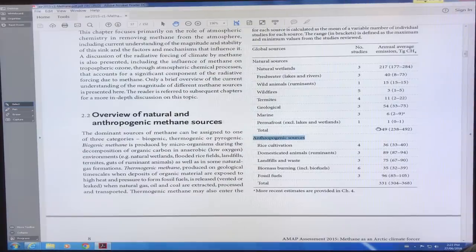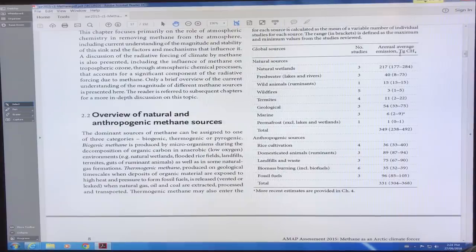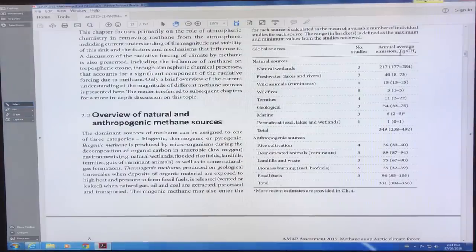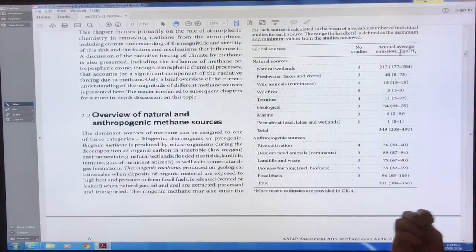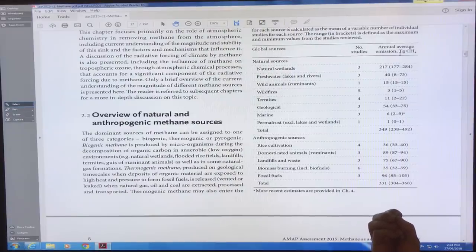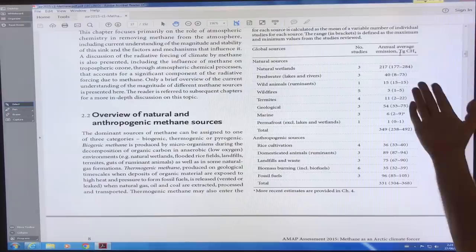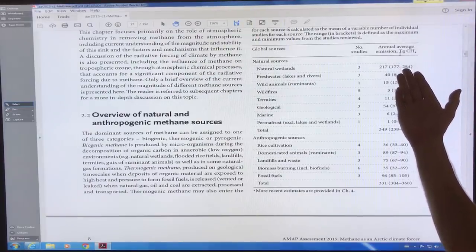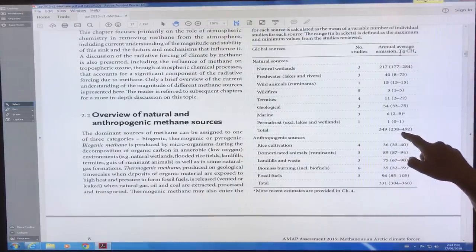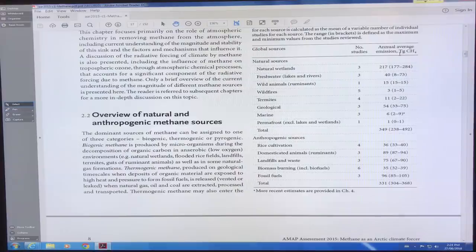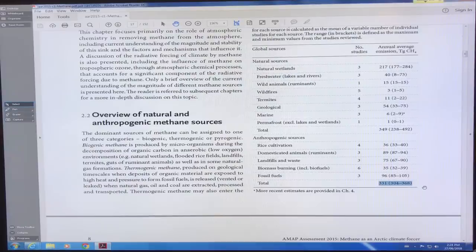The total of natural 349, the units are teragrams. Teragrams are like gigatons. Giga is 10 to the ninth. A ton is a thousand kilograms. So you multiply by 10 to the cube for the thousand and 10 to the cube for kilograms to grams. So you get 10 to the 15 grams. Which is so gigaton and teragram. So 349 natural and anthropogenic 331. So comparable, the natural and anthropogenic emissions are comparable.